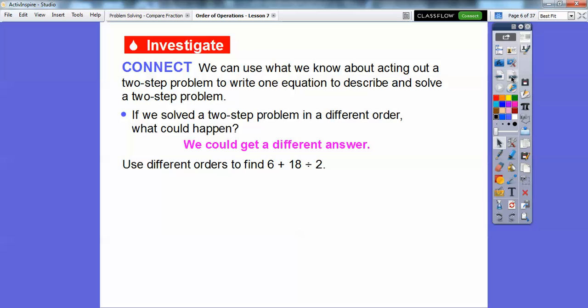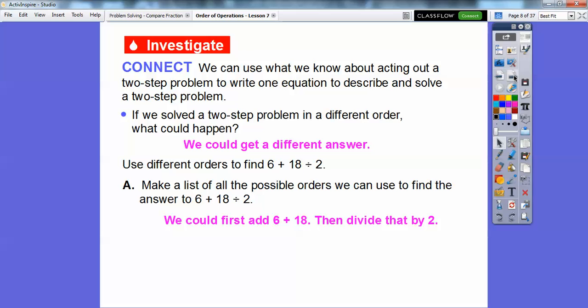So think of this. Use different orders to find 6 + 18 ÷ 2. So we could just do 6 + 18 and then take that answer and divide it by 2. We're going to go ahead and make a list of all the possible orders that we can use to find the answer 6 + 18 ÷ 2. So the first one, we can first add 6 + 18 and then take that and divide that by 2.